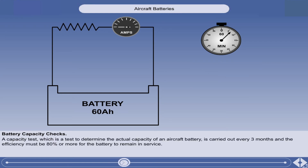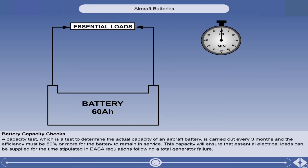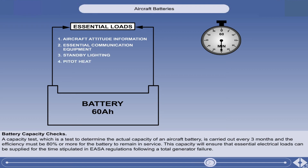A capacity test, which is a test to determine the actual capacity of an aircraft battery, is carried out every three months, and the efficiency must be 80% or more for the battery to remain in service. This capacity will ensure that essential electrical loads can be supplied for the time stipulated in EASA regulations following a total generator failure. Essential loads will include aircraft attitude information, essential communication equipment, standby lighting, pitot heat, plus any other services necessary for continued safe flight.